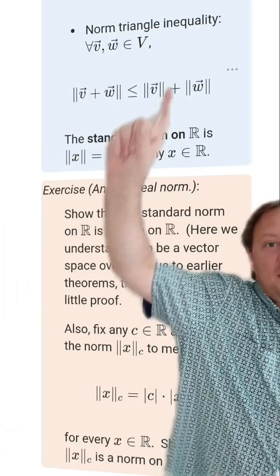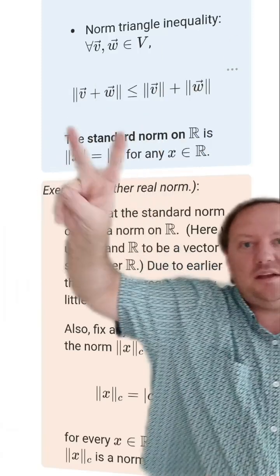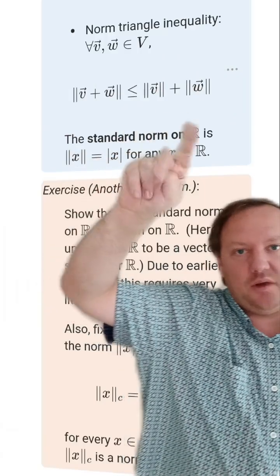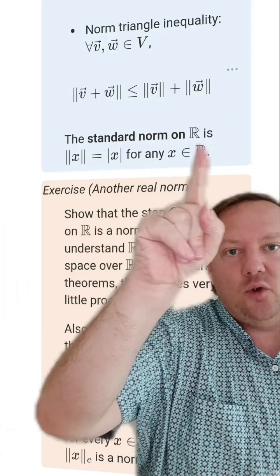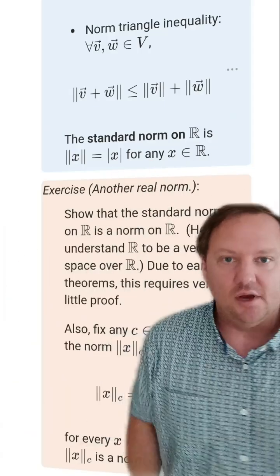And finally, the big one, it has to have the norm triangle inequality saying that if you take the norm of v plus w, it's less than or equal to the sum of the individual norms. The standard norm on the real numbers is the absolute value of the number.